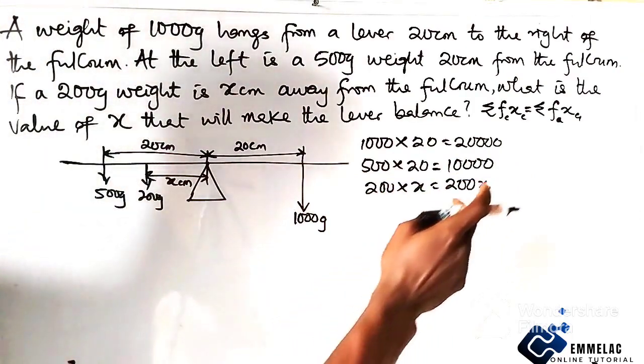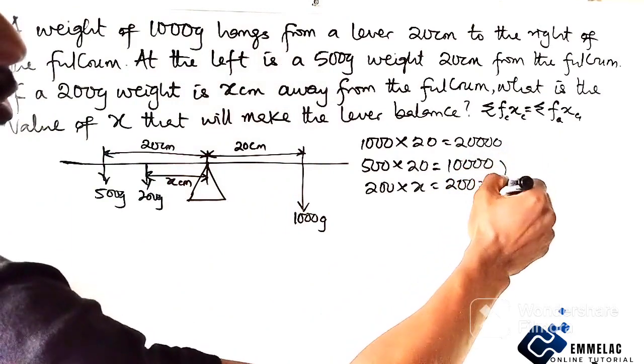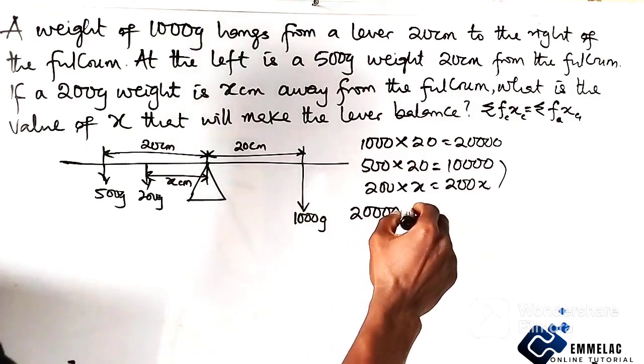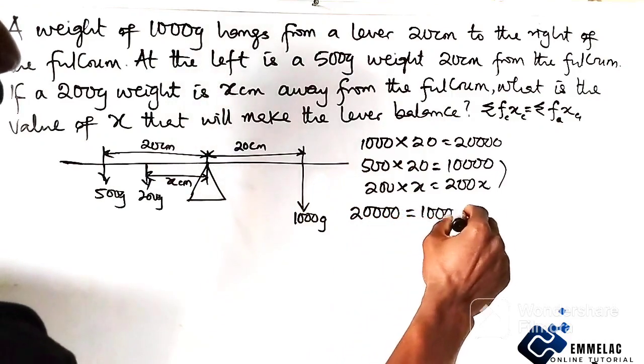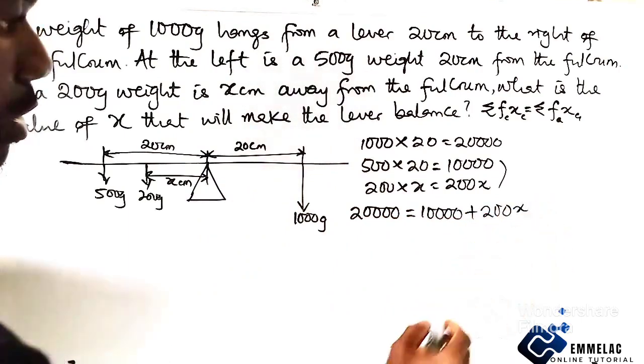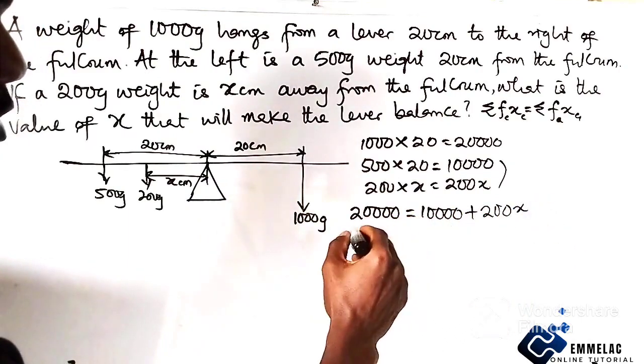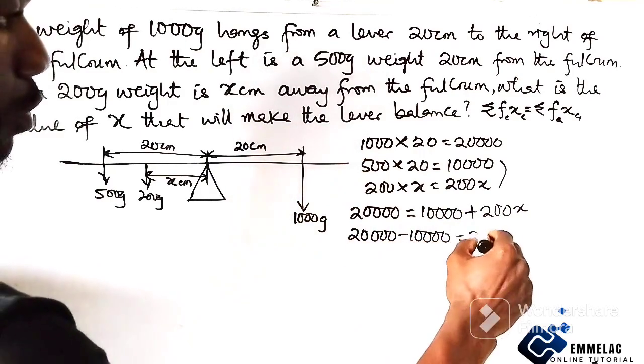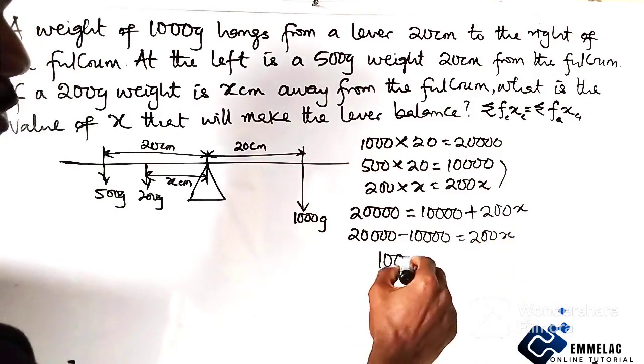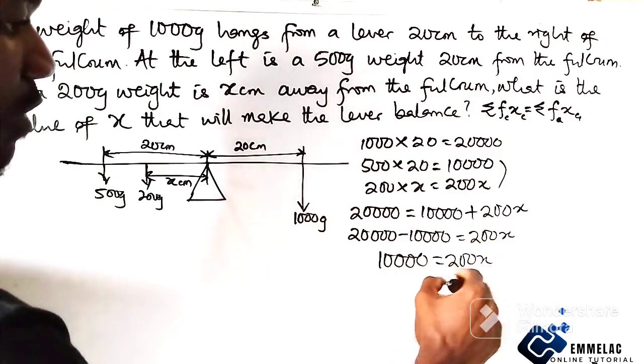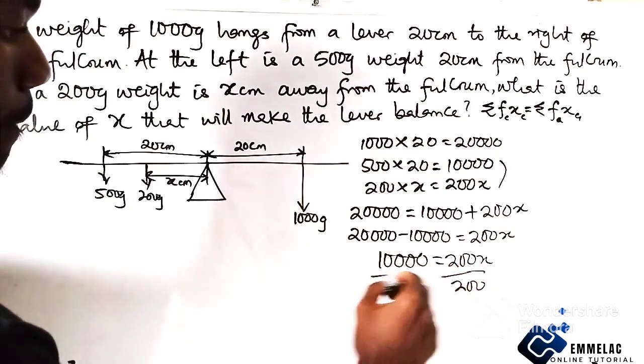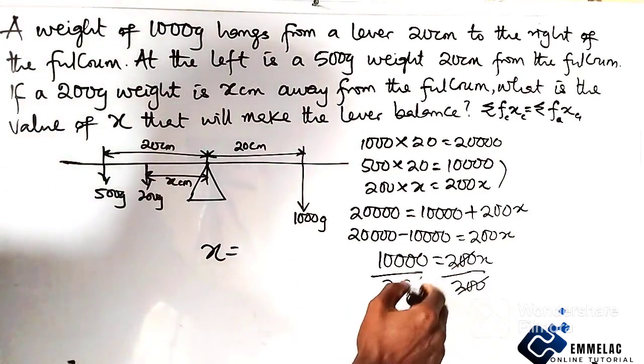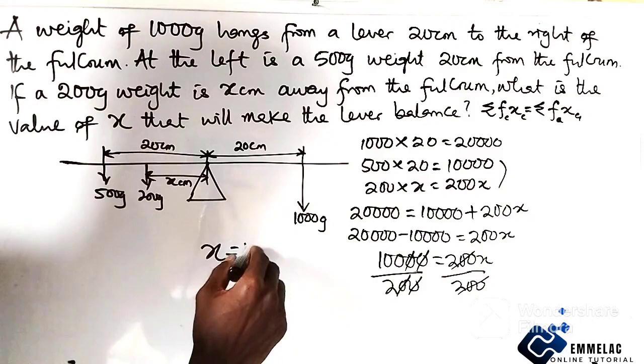Now take note, this will be the total sum of these two. So here we have 20,000 equals 10,000 plus 200x. Now subtracting 10,000 from both sides, you have 20,000 minus 10,000 equals 200x. So here you have 10,000 equals 200x. Divided by 200, this will cancel, so our x will now be, zeros cancel, so I left it was 100 divided by 2.